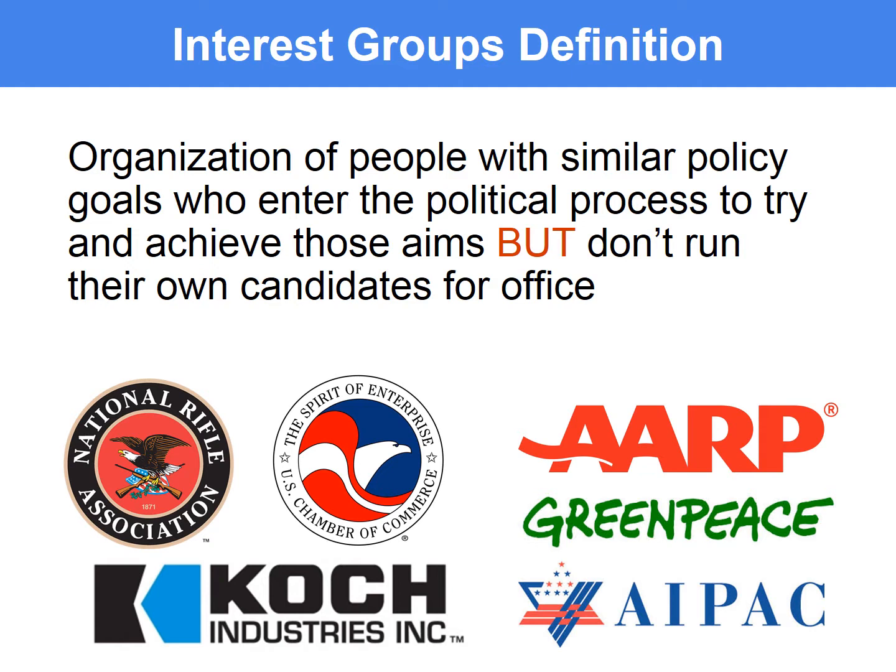The U.S. Chamber of Commerce is a long-time big spending interest group that represents businesses across the United States. And AARP is an interest group that focuses on social welfare for retired people. We have a variety of interest groups, many serving different purposes, and they tend to be centered around issues.